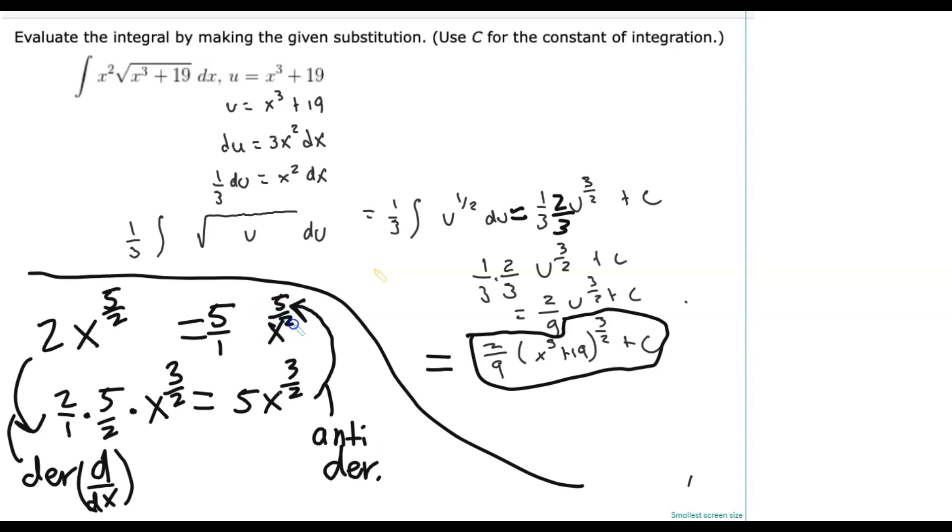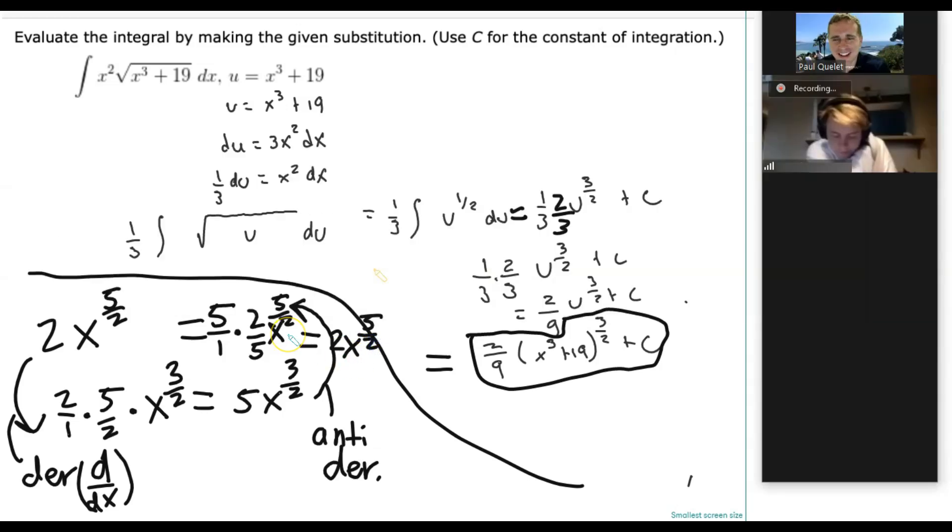But now look at this—the fives are going to cancel to give us the two, because we get 2x^(5/2). Isn't that interesting? It's the other way around.